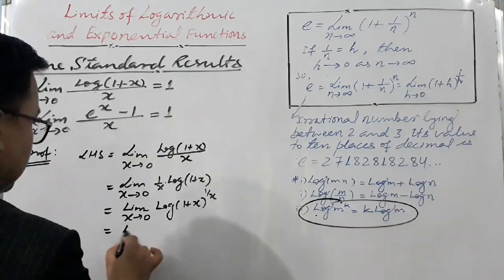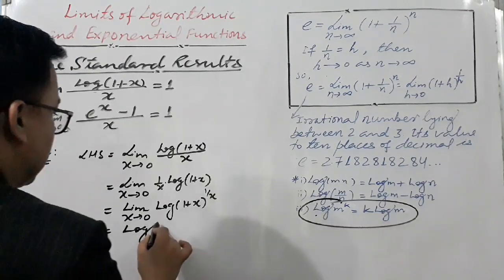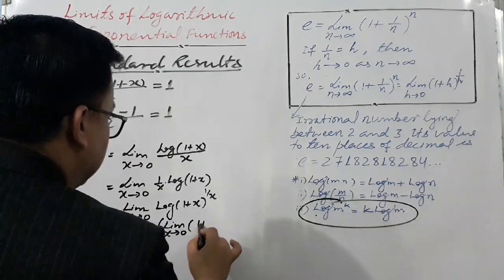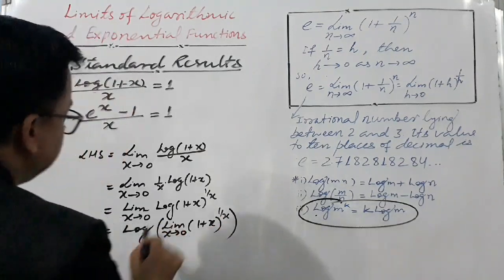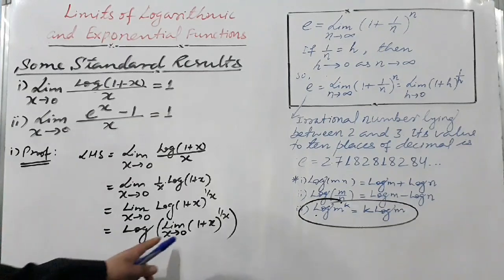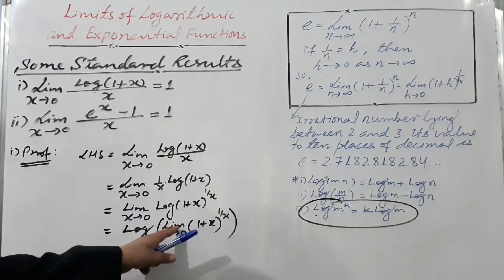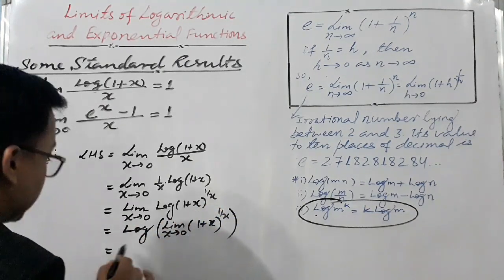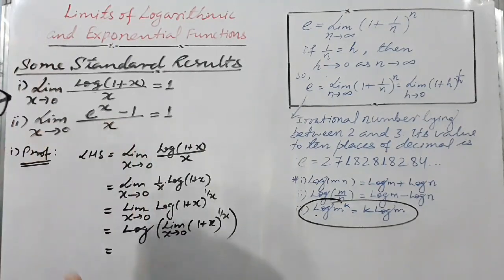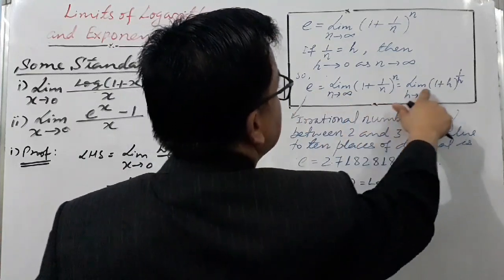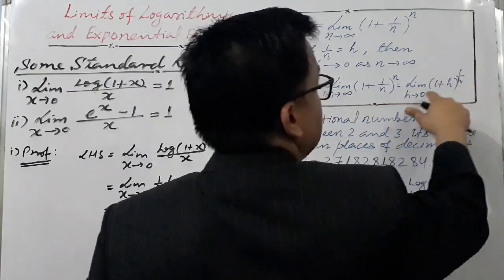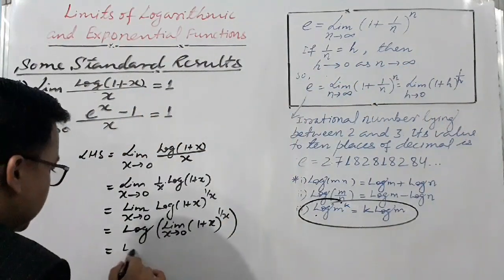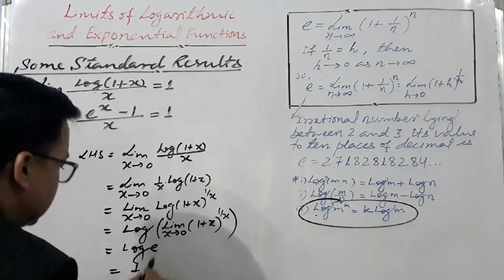We can also write this as log of the limit as x tends to 0 of (1 + x) raised to power (1/x), treating log as an operator - this is also a limit property. Now, the limit of (1 + x) raised to power (1/x) as x tends to 0 is equal to e. So we get log e, and log e is equal to 1.